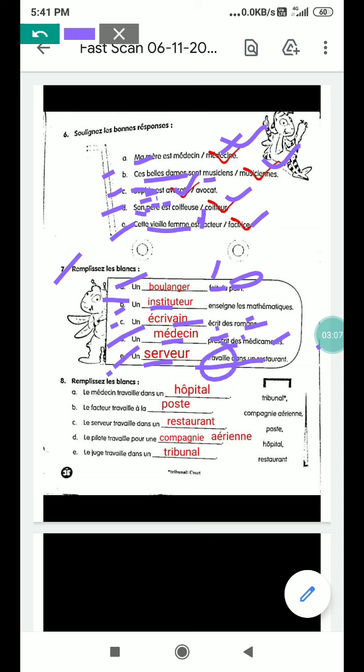Eighth part, remplissez les blancs, fill the blanks. First one is le médecin travaille à l'hôpital. The hospital. A médecin, the doctor works in a hospital. Part B, le facteur travaille à la poste. The postman works in a post office.